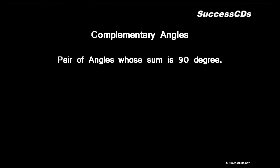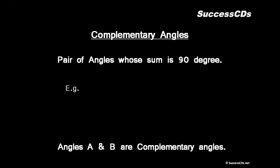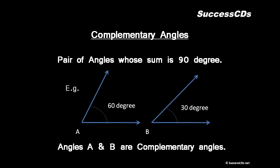Next we move forward to complementary angles. A pair of angles whose sum is 90 degrees are known as complementary angles. For example, we have two angles: one is 60 degrees and the other is 30 degrees. Angle A equals 60 degrees and angle B equals 30 degrees — their sum is 90 degrees. So angle A and angle B are complementary angles. Remember, these angles may or may not be adjacent angles; it is not a definite rule.